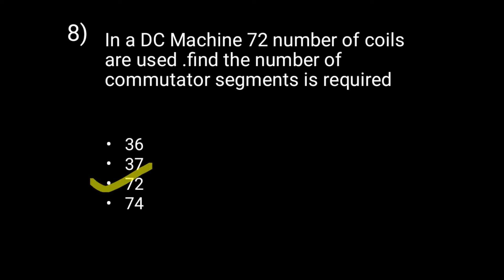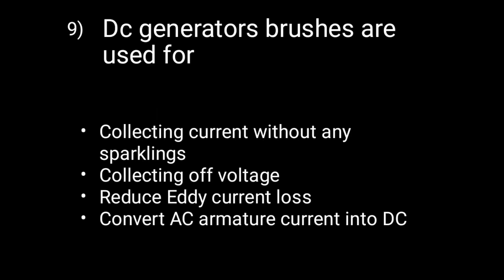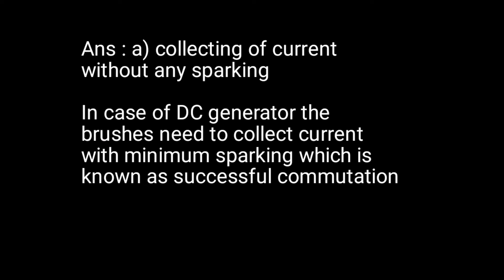Question 8: Option C is correct — in a DC machine, the number of coils is equal to the number of commutator segments. Question 9: In DC generators, brushes are used for collecting current with minimum sparking, which is known as successful commutation.